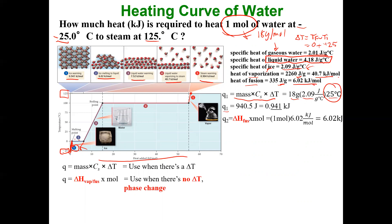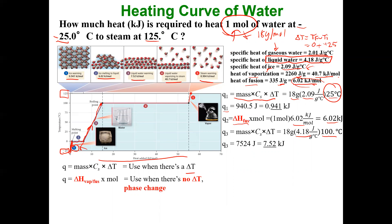For Q2, the curve flattens — all energy goes into melting. Using the heat of fusion: one mole times 6.02 kJ/mol gives 6.02 kilojoules. Once everything melts, for Q3 I have liquid water rising from zero to 100°C — a positive slope — so I use Q equals mcΔT with the specific heat of liquid water, 4.18 J/g°C. Delta T is 100 minus zero equals 100°C, giving 7.52 kilojoules.